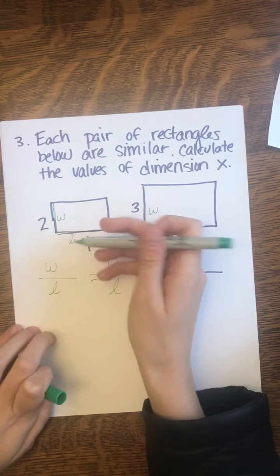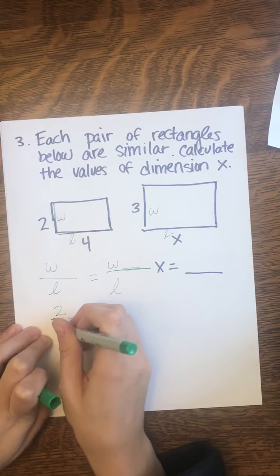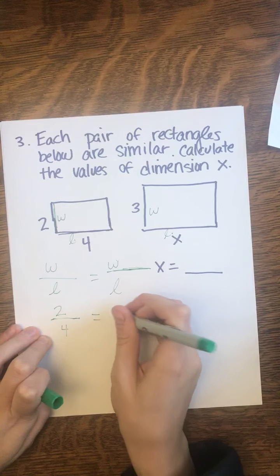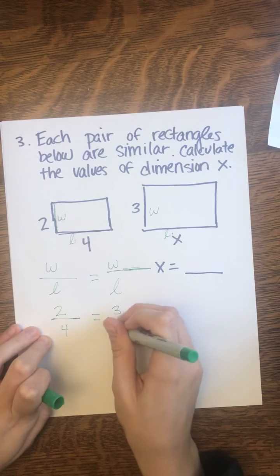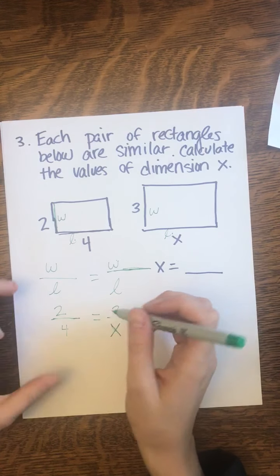For the smaller rectangle, my width is 2, so I'm putting it down here, and my length is 4. So now I'm going to fill in the other side of the proportion. My width is 3, and my length is X.